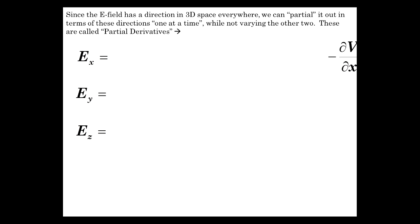So we have E in the X, E in the Y, E in the Z. E_x is minus partial V partial x, E_y is minus partial V partial y, the rate at which the potential changes in the Y direction, and E_z is minus partial V partial z.